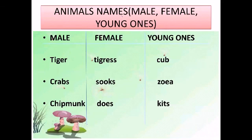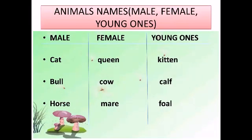Next is crab — young: zoea. Next is chipmunk — female: doe, young: kid. Next we have cat — female: queen, young: kitten. Next is bull — female: cow.